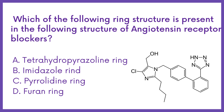Which of the following ring structures is present in the structure of angiotensin receptor blockers? Option A: Tetrahydropyrazoline ring. Option B: Imidazole ring. Option C: Pyrrolidine ring. Option D: Furan ring.